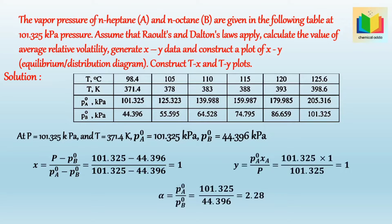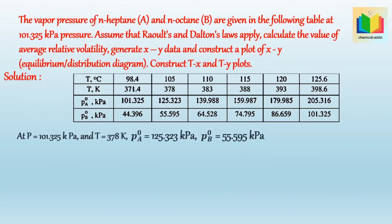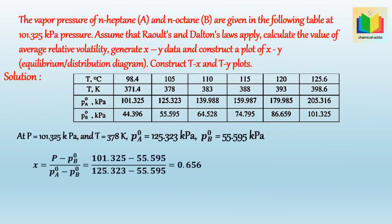Similarly, let's find X, Y, and alpha for temperature equals 378 Kelvin. At T equals 378 Kelvin, P_A° equals 125.323 kPa, and P_B° equals 55.595 kPa. After putting the values in and solving, we get the corresponding X, Y, and alpha values.